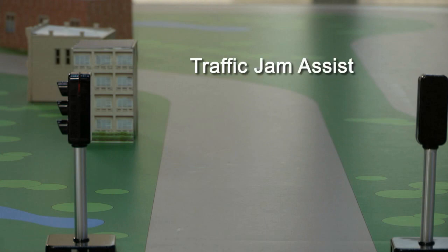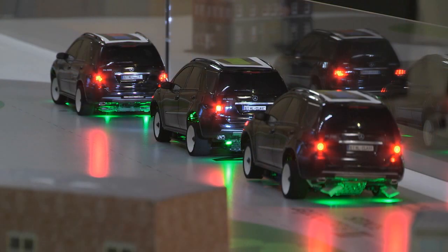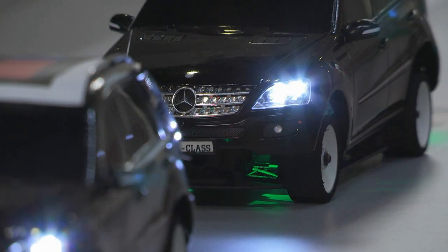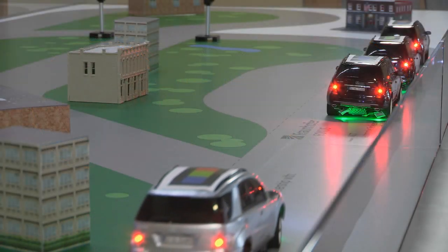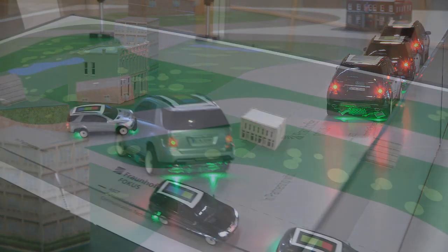This demonstration of Traffic Jam Assist is an example that allows the driver to bypass traffic congestion. Imagine there are cars ahead that are stuck in a traffic jam. Cars in the traffic jam equipped with a V2X module can inform our vehicle of real-time traffic conditions. This allows us to consider an alternate route to avoid the traffic.